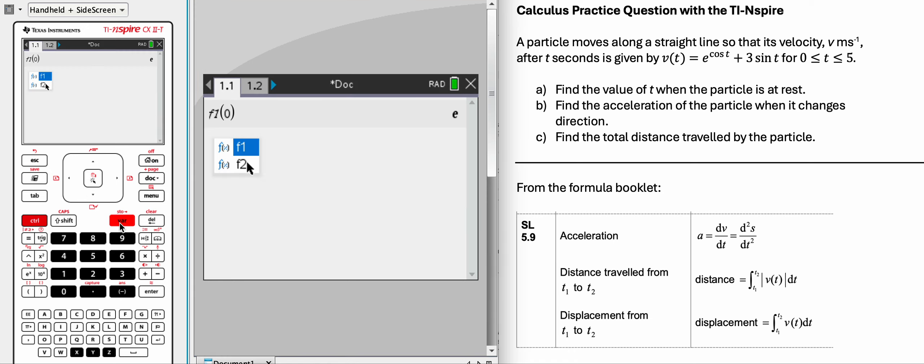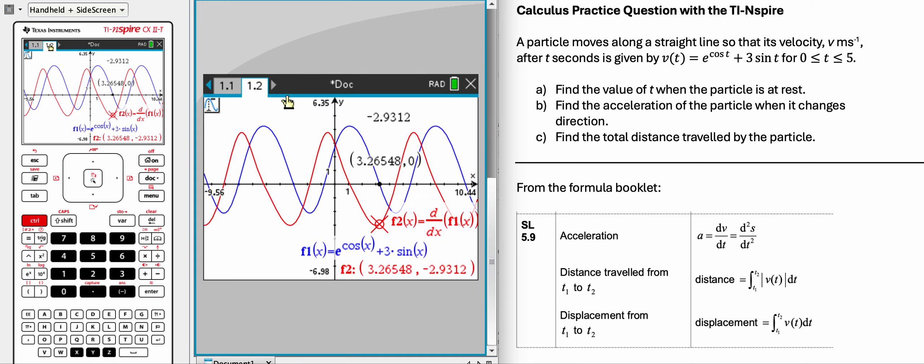And notice that the derivative function is also here. So we can find the y-intercept by doing the same thing. That's of the derivative function. So we wanted to find the acceleration when the particle is at rest, which was this is the acceleration function, and we can substitute in the number that we had from here. We could copy and paste this.